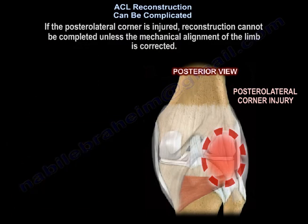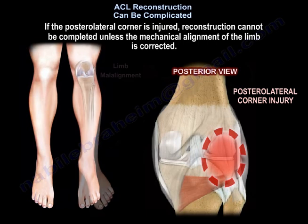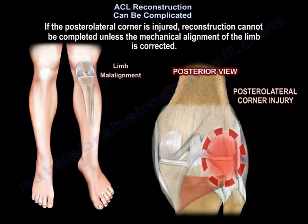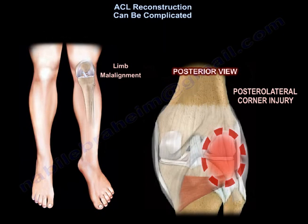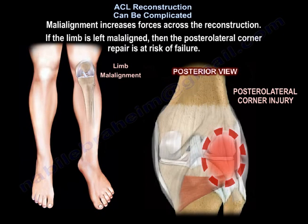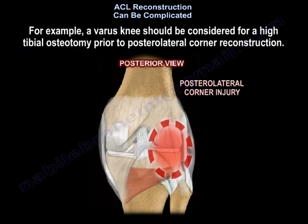If the posterior lateral corner is injured, reconstruction cannot be completed unless the mechanical alignment of the limb is corrected. Malalignment increases forces across the reconstruction, and if the limb is left malaligned, the posterior lateral corner repair is at risk of failure. For example, a varus knee should be considered for a high tibial osteotomy prior to posterior lateral corner reconstruction.